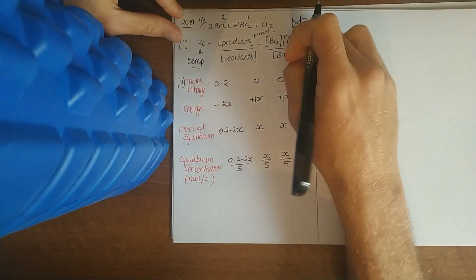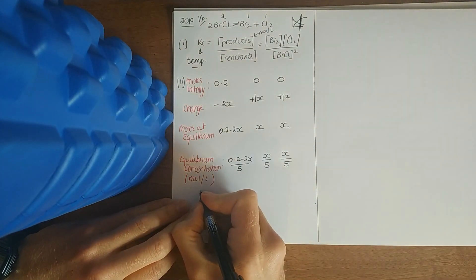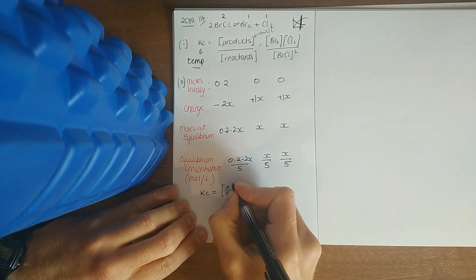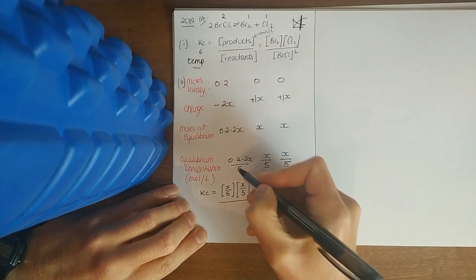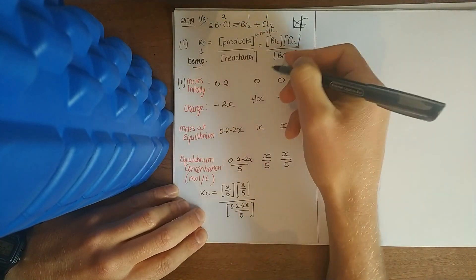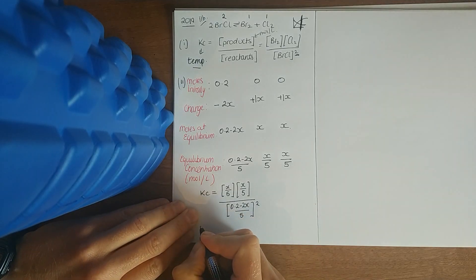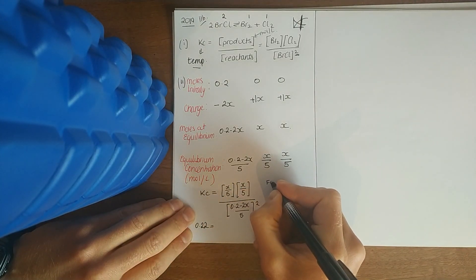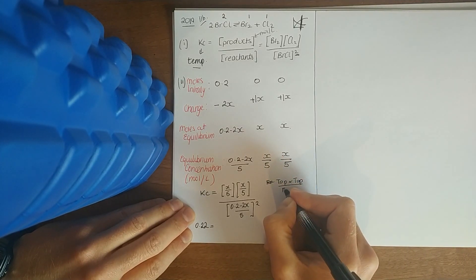What you do is fill it in into your equilibrium constant expression. So KC equals Br2 which is x over five times Cl2 which is x over five over BrCl, and the thing I nearly always forget is to multiply it by that number, so it's crucial that you have this squared. We know the value of KC is 0.22.